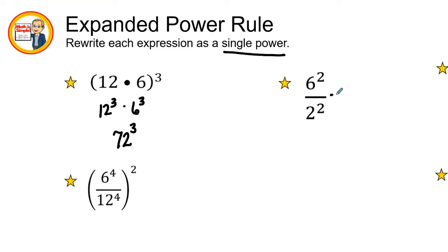Coming over here we see that my bases are different but my power is the same. So I'm going to keep my power the same on the outside of the parentheses and then I keep my bases of six over two.